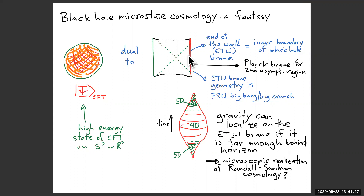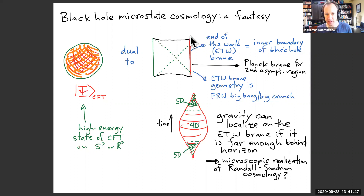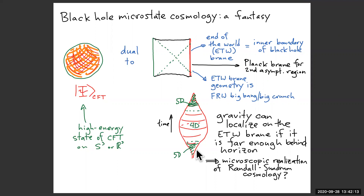Question: I'm confused about the picture on the bottom right. It looks like you're depicting a closed universe, but if I pick a spatial slice, shouldn't it have some kind of wormhole connecting it to the asymptotic region? Answer: What I'm drawing is just the intrinsic geometry of this end-of-the-world brane. The higher-dimensional graviton has a mode that localizes onto the brane and behaves as a 4D graviton. So the bottom picture is an effective field theory description — it's an effective field theory of the top picture.